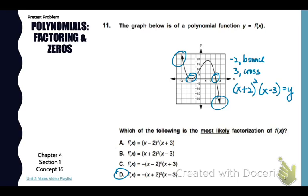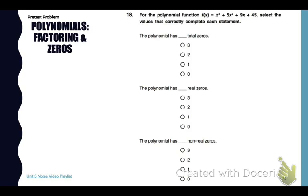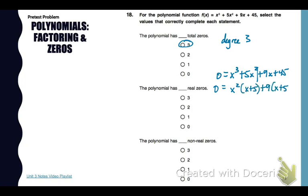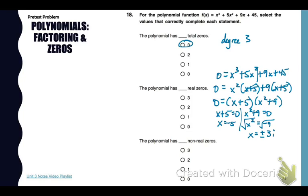Now let's look at number 18 in your pretest packet. For the polynomial function, we need to select values that complete each statement. How many zeros? That's easy — you just look at the degree. There are three total zeros. For real vs. non-real, we find zeros by factoring. Factoring by grouping, I get x plus 5 times x squared plus 9. Setting those equal to 0, I get a real answer of negative 5 and two non-real zeros of plus and minus 3i. So this polynomial has one real zero and two non-real zeros.